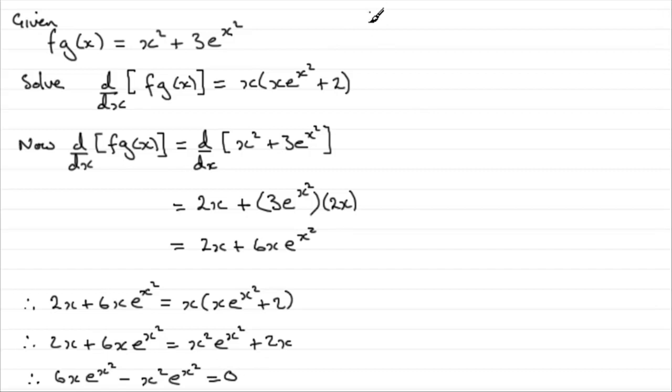Now what I'd want to do now is to factorise this. And we could pull out an x and e to the power x squared as a common factor. So therefore, we'd have x e to the power x squared as the common factor. And we'd have a 6 for the first term here. And for this second term, we would just simply need minus x. And that equals 0.